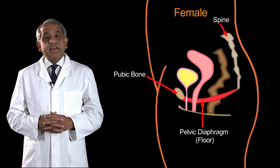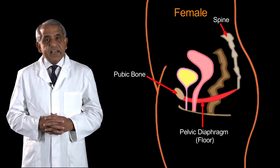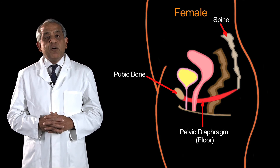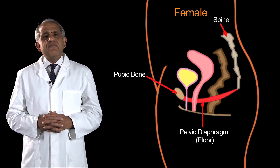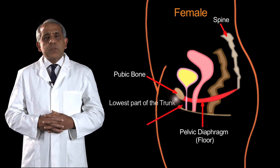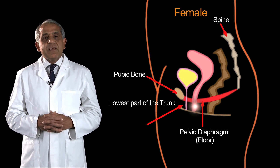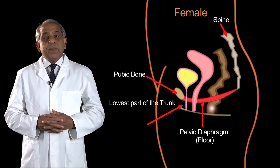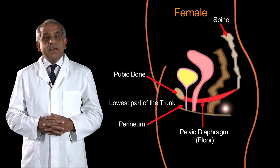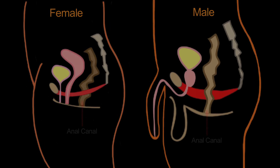Below the pelvic floor, or inferior to the pelvic floor, is the very lowest part of the trunk, and this we call the perineum. In both sexes, the perineum is occupied by the anal canal.